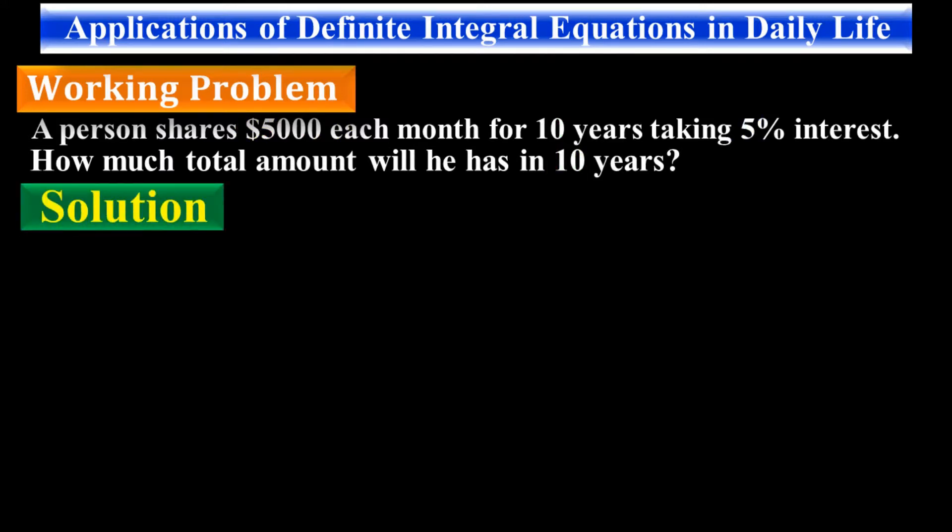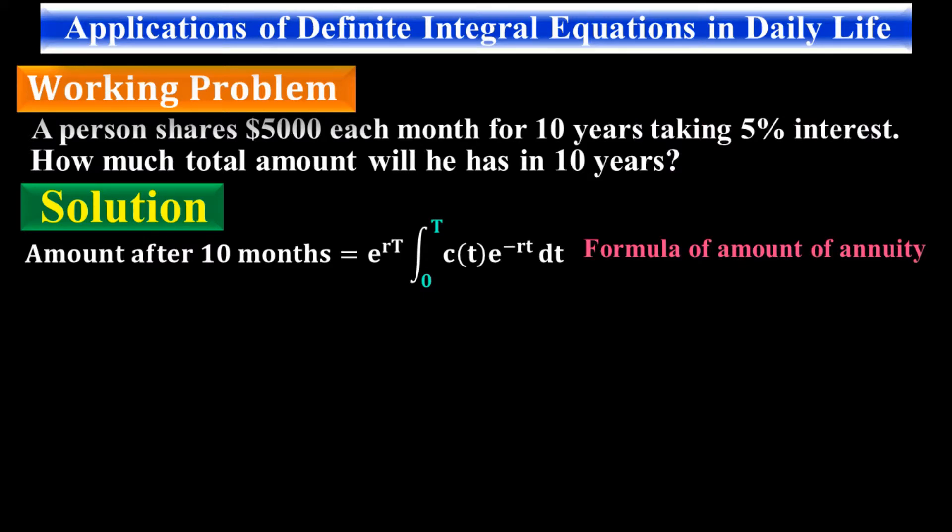Solution: Amount after 10 months equals e to the r times t into integral of c of t times e to the minus r times t dt, with the limits from 0 to t, where t is the time period. It is a simple formula that we use for annuity estimation.